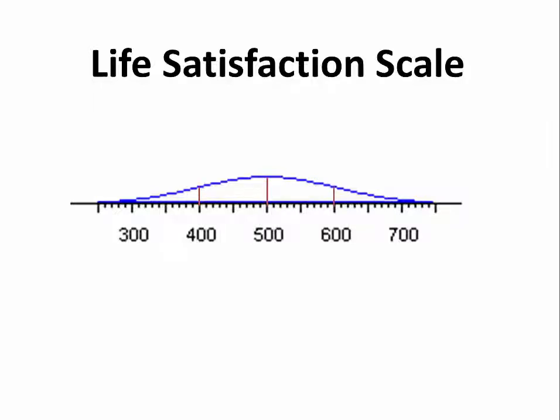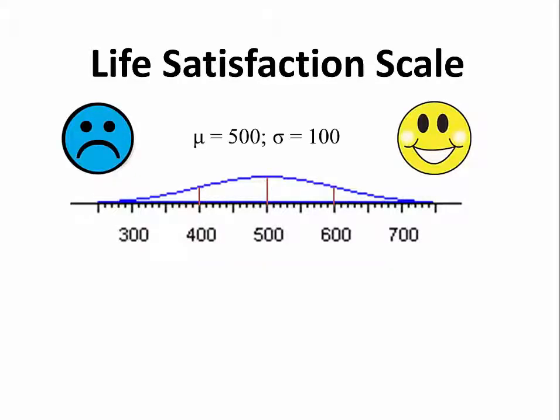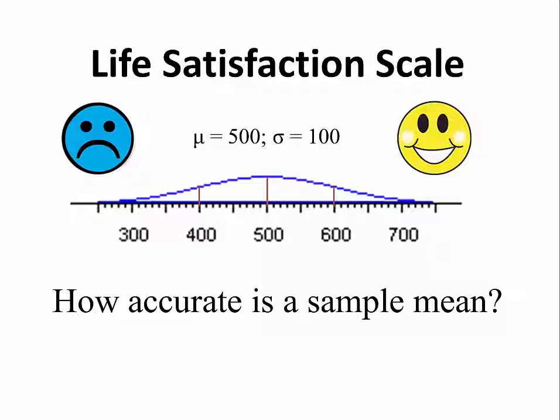Suppose we've developed a new scale for life satisfaction. People who get very low scores on this scale are unhappy with their life, while people who have high scores are relatively happy. Suppose that in our state, the average is 500 and the standard deviation is 100. We could use this scale to estimate the average life satisfaction for a large group by taking a random sample from that group and calculating the mean. But a basic question would be, how accurate is this mean? So that's the key question that we will address in this lesson.